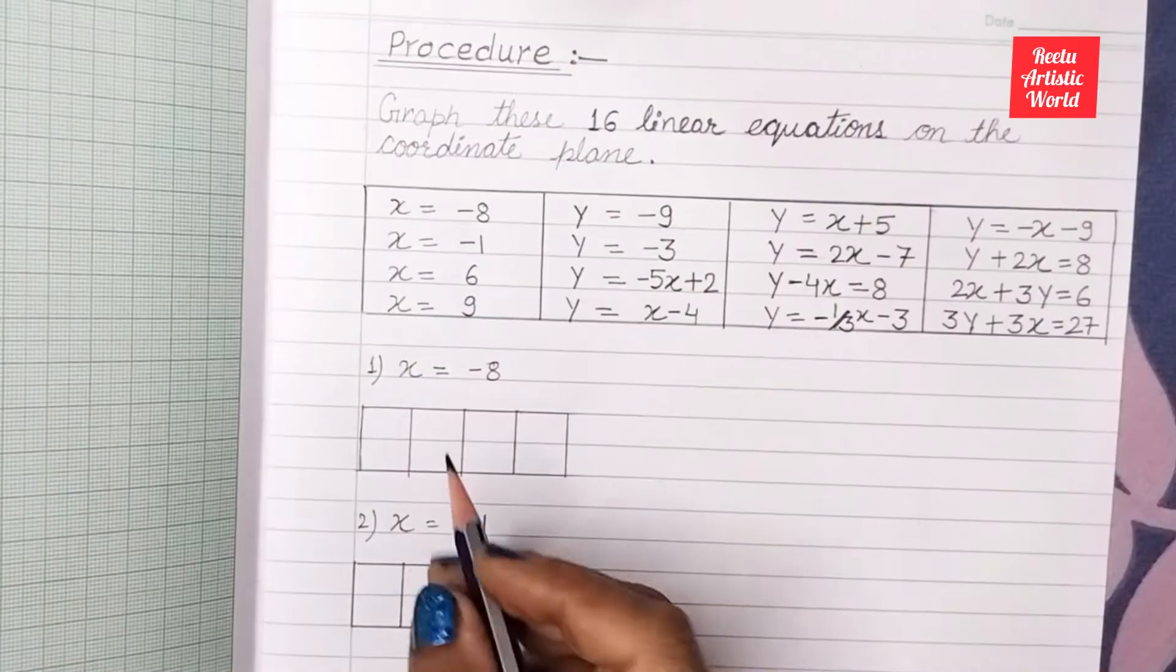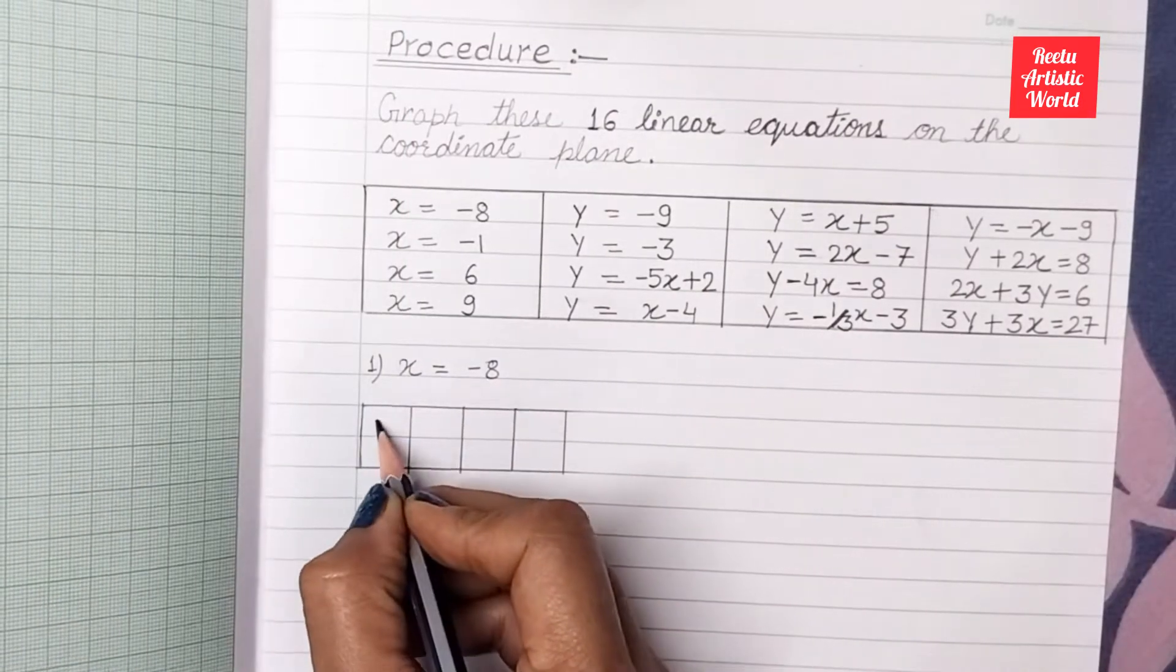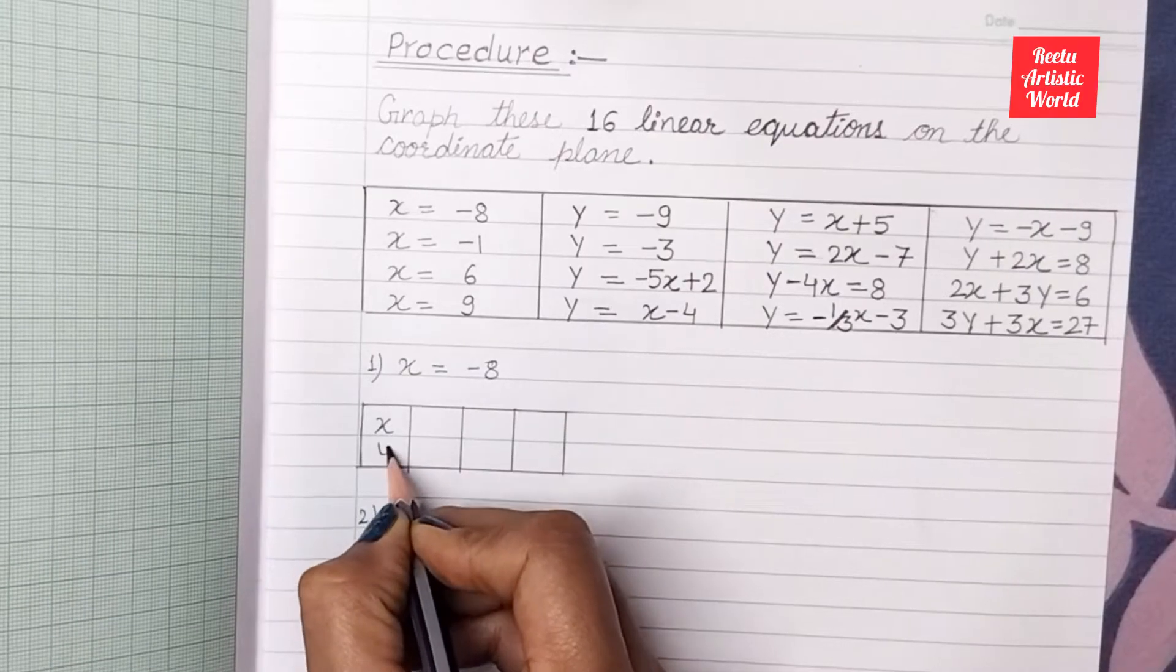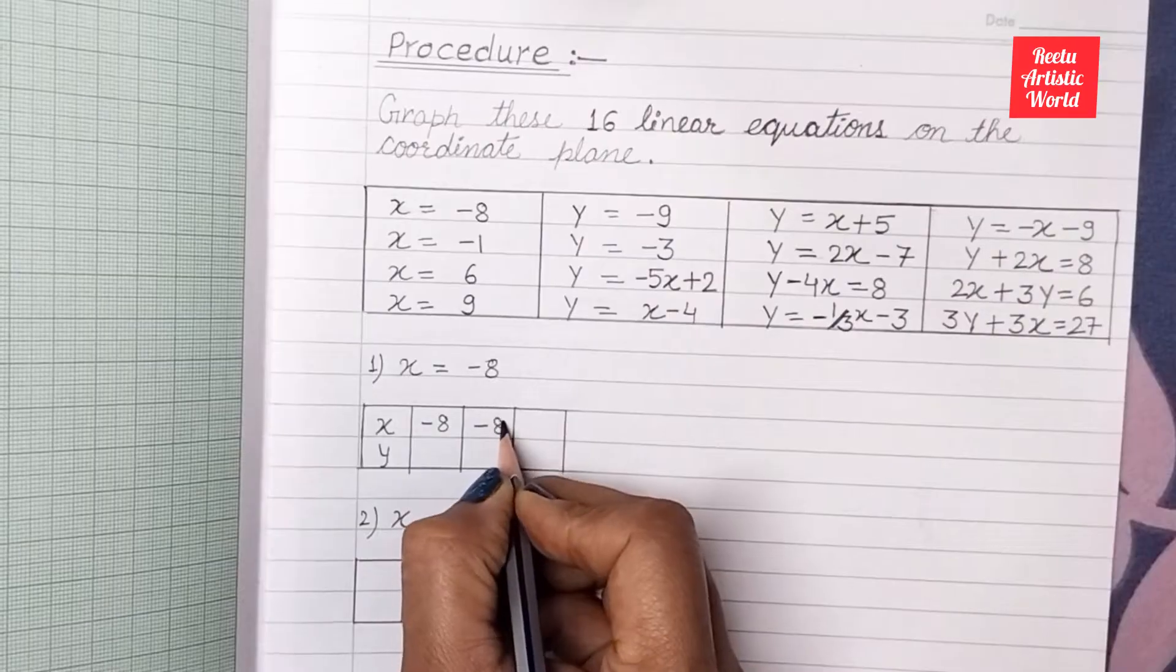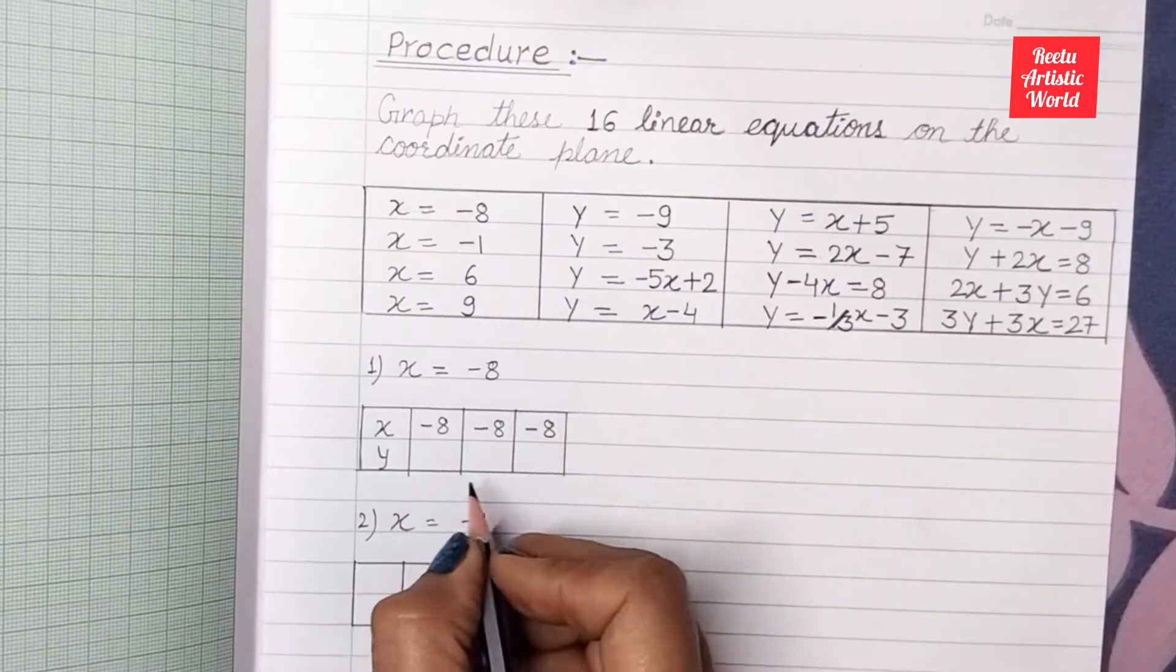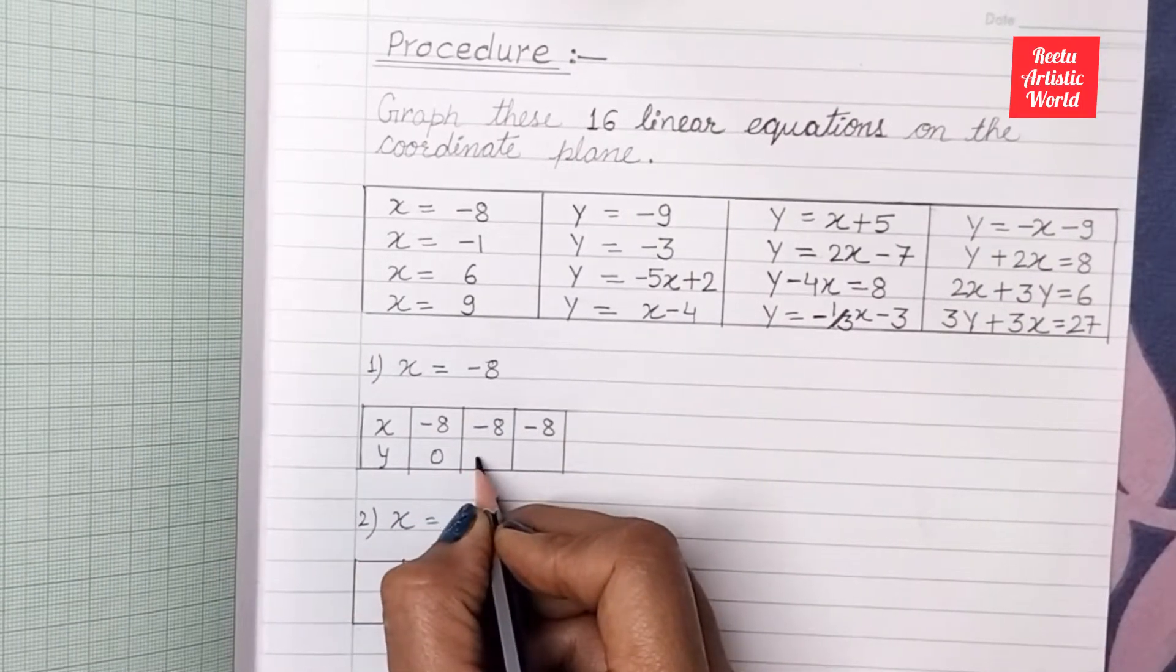Required material. There is given x is equal to minus 8. So we assume y is equal to 0, 1, and 2.